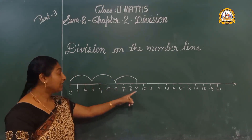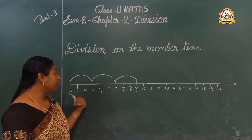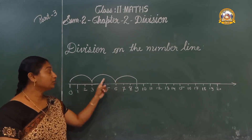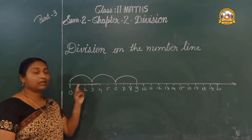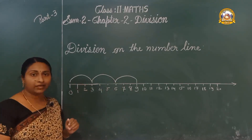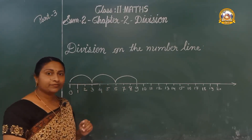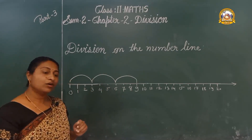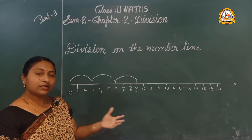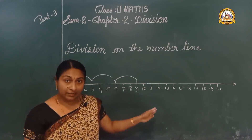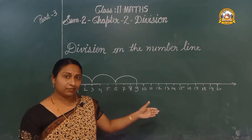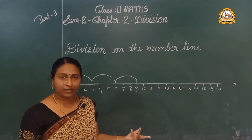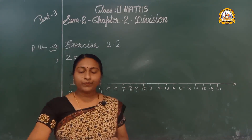So, 9 divided by 3 — how many jumps? 1, 2, 3. The answer is 3. Understood? Okay children, let us do this exercise now. We have started and learned this. Okay, take your book.